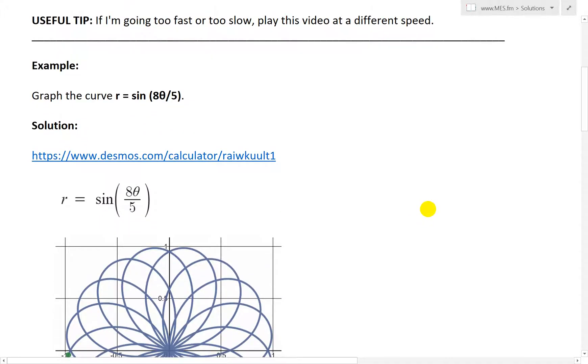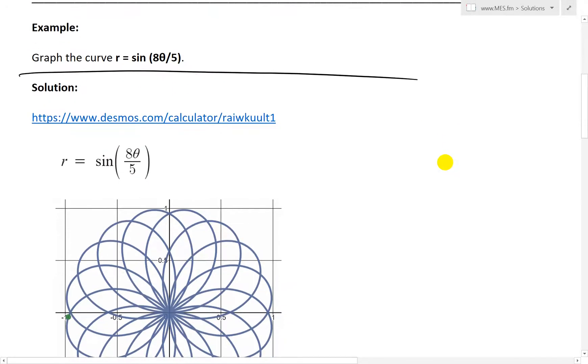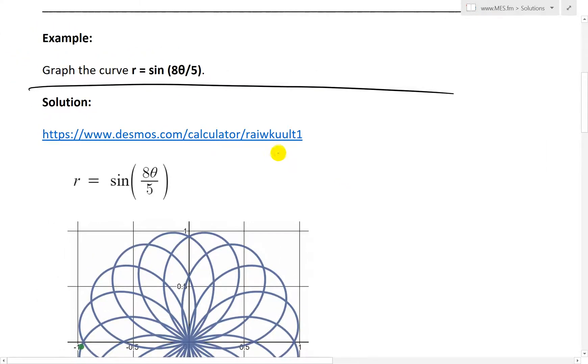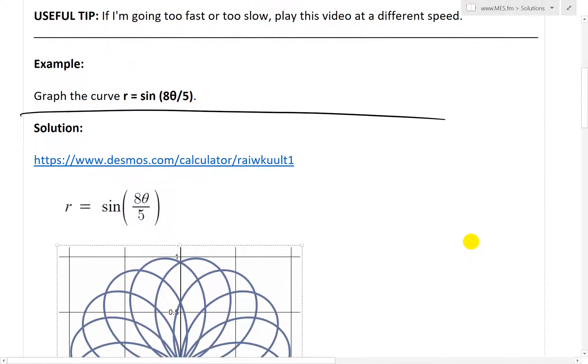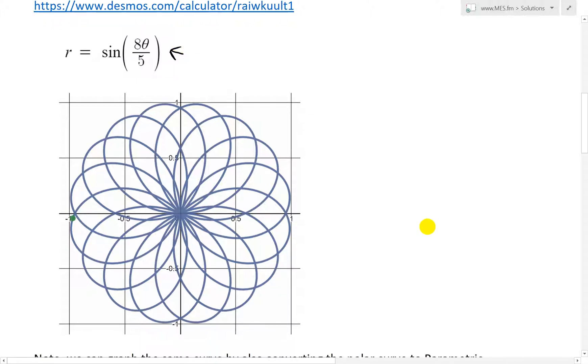It says graph the curve r = sin(8θ/5). Here I already have the solution. Here's a link to the Desmos calculator. Before I get to it, basically here is the shape that you end up getting right here. So this is the curve, r = sin(8θ/5), so you just type that in.